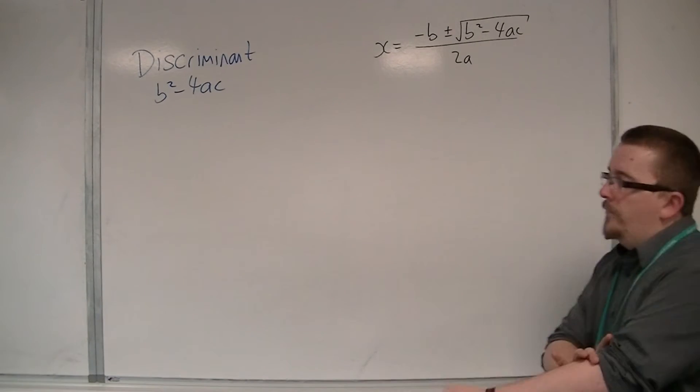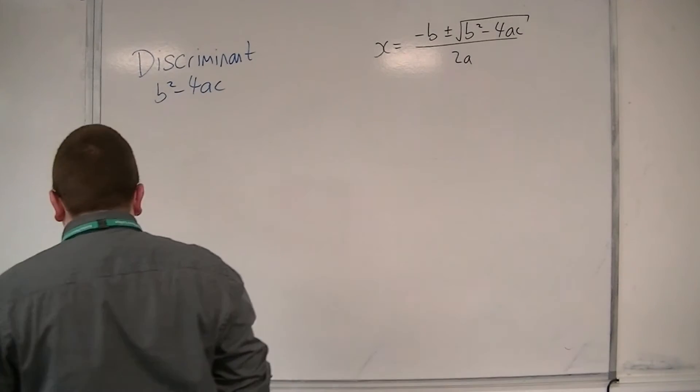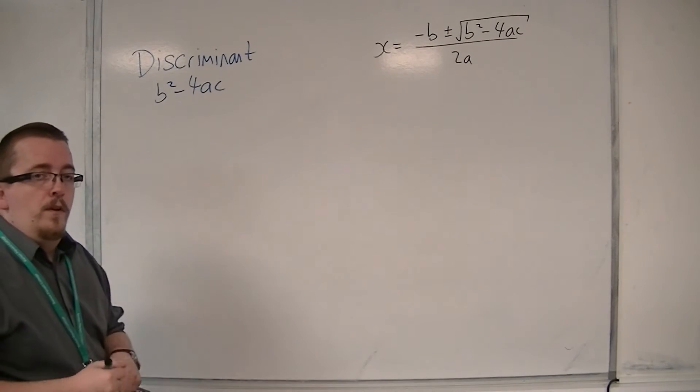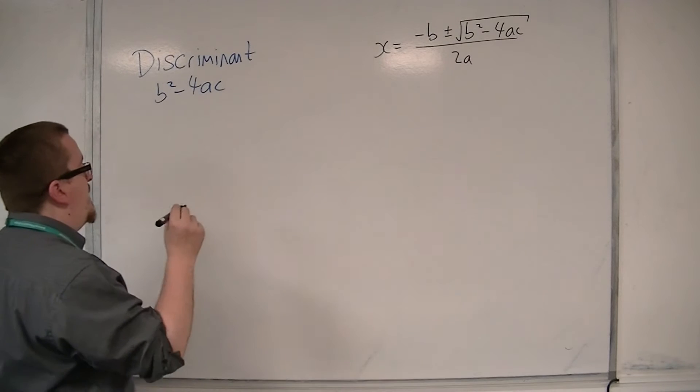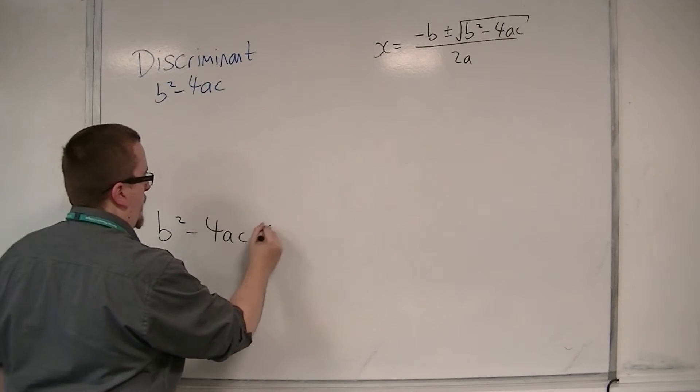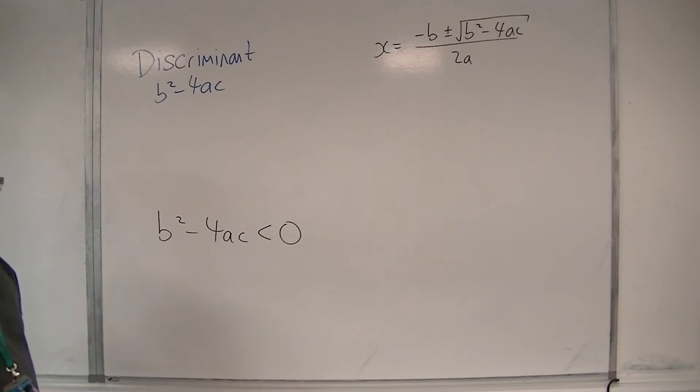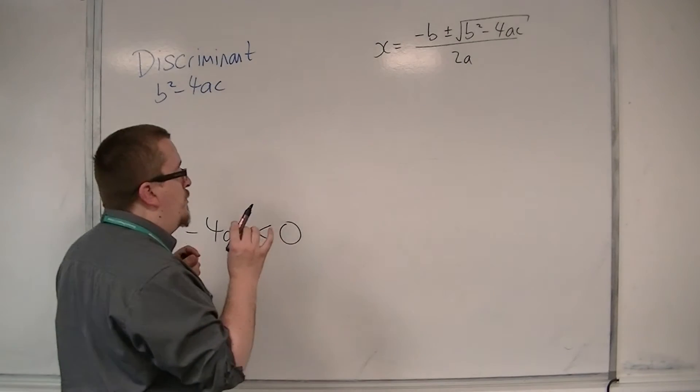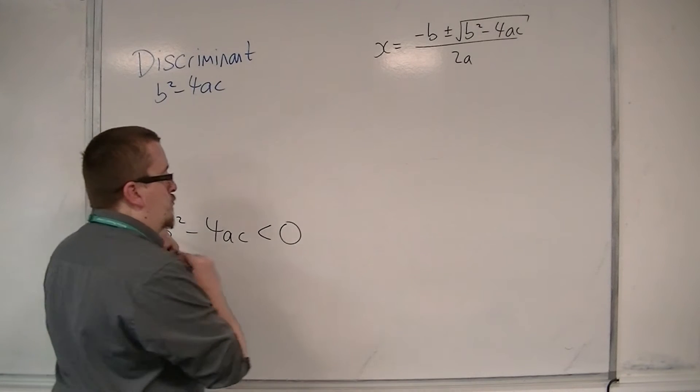So we've seen that if the discriminant is negative, so if it's less than 0, then that means that there are no real roots.